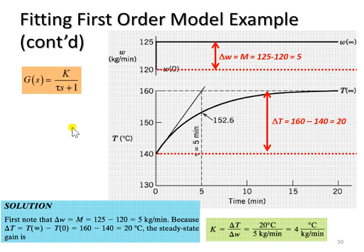We note that the change in input, delta W or delta M, is equivalent to 125 minus 120. So we have the change in input equivalent to 5 kilogram per minute.